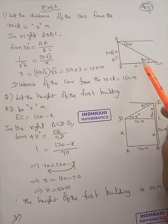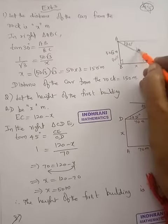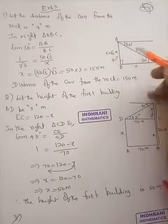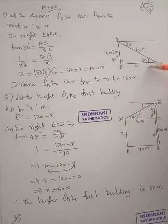We know that tan 30 degrees is opposite by adjacent. This is 90, so this is the hypotenuse, we don't need that. So these two sides are useful. Let the distance of the car from the rock be x meters.